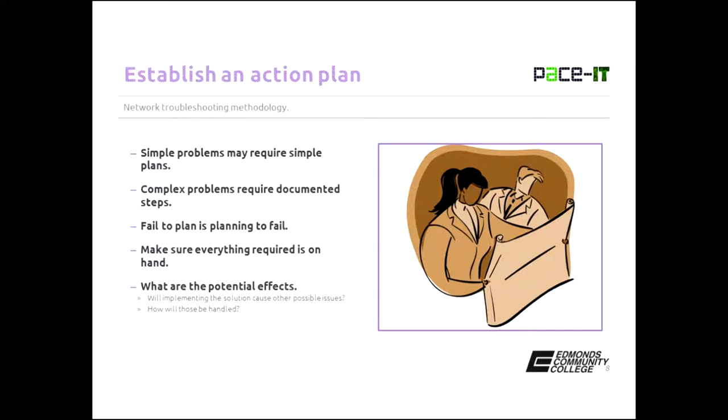Once you've tested it and established that that is the real problem, then you do an action plan. Sometimes simple problems may require a simple plan. Your action plan may be, somebody tripped over the ethernet cable and pulled it out of the back of the PC, so I'm going to plug it back in. That's a simple one. Sometimes the problems are a little bit more complex. The Cisco 1812 router went down. I need to get another one out of stock, create the configuration file, load it, and reinstall it. So you need that kind of action plan. You need to document it down. If you fail to plan, that means you're planning to fail. Just about every action when you're dealing with a network, you should have a plan. And once you go to start your plan, before you begin, you need to make sure that everything that is required to fulfill your plan is on hand.